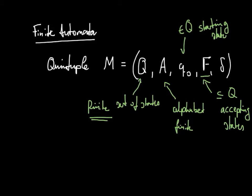Then there is delta, which plays a special role. Delta is a function from Q cross A into the set of states again, and it is called the transition function.